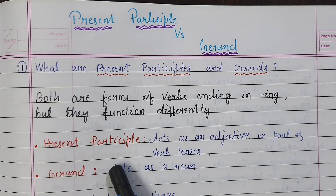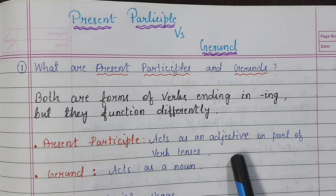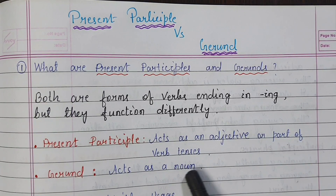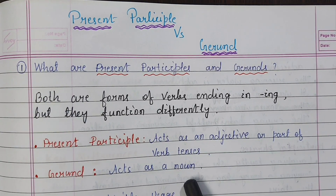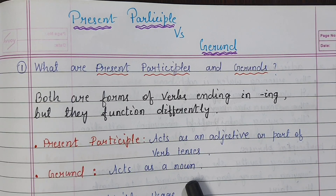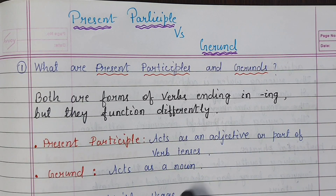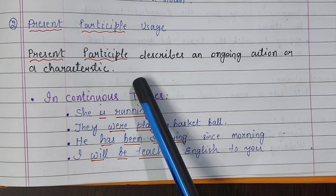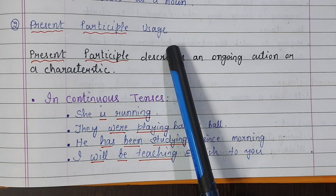What is present participle? Present participle acts as an adjective or part of a verb tense. But gerund acts as a noun — the ing form of a verb functioning as a noun. That is a gerund.